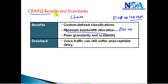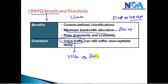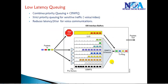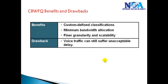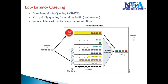One major drawback with class-based weighted fair queuing is it adds delay to sensitive traffic like voice traffic. Even though we define a guaranteed bandwidth for voice, there is a possibility that voice packets may get delayed — and that is something we don't want. Class-based weighted fair queuing has issues with applications like voice traffic that cannot tolerate delay or jitter. To fix this, low latency queuing provides a strict priority queue, reducing delay and jitter for voice communications.